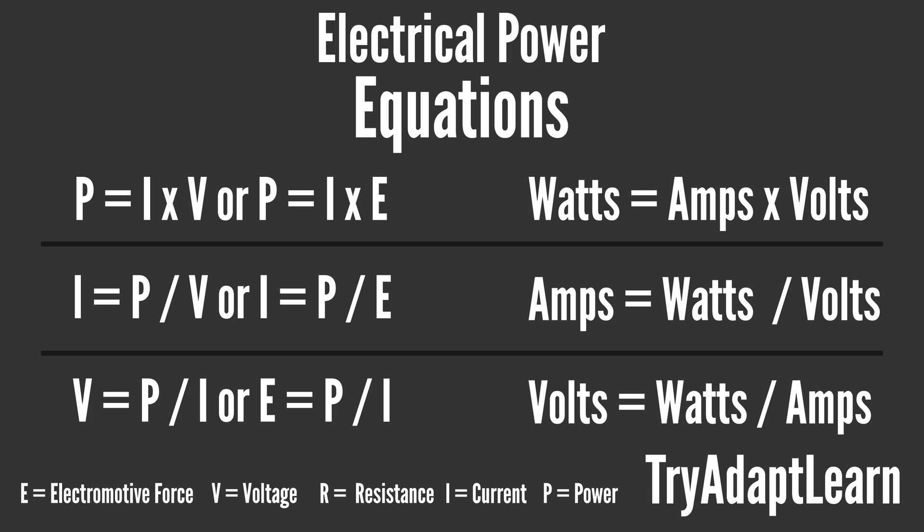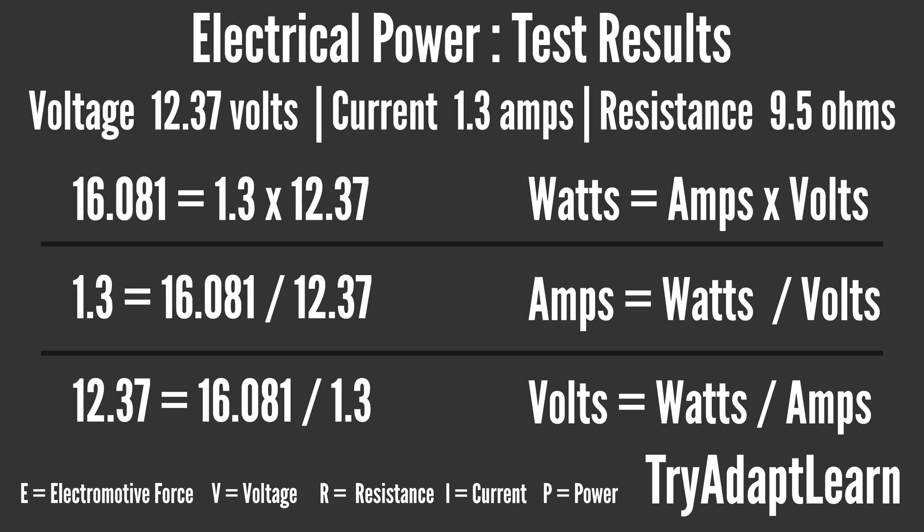As a side note, electrical power may also be calculated using these additional equations in this visual aid. As related to electrical power, the value for power will be in watts. Again, the practical application is that if you have only two out of the three values you can solve for the last. As related to the power equations, we can estimate that the bulb is using 16 watts of power.